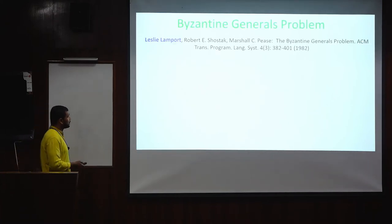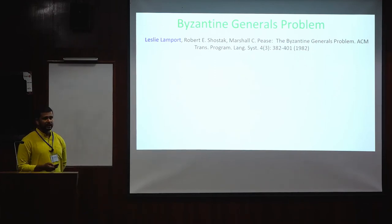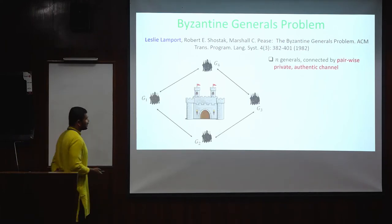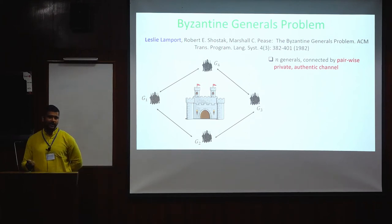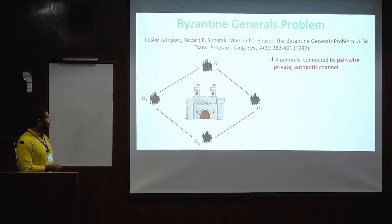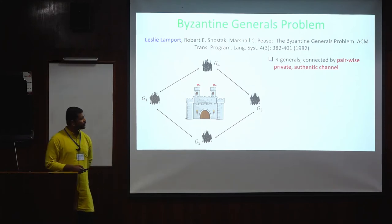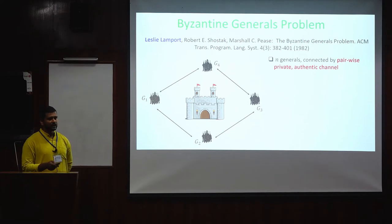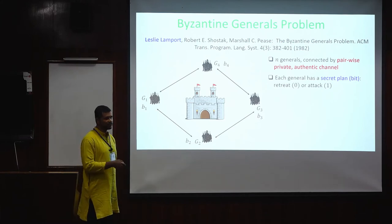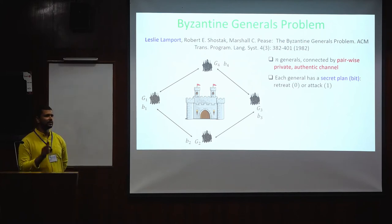Let's begin with the problem description. This is called the Byzantine Generals Problem, introduced by Lamport et al. in 1982. Lamport is a Turing Award winner. Consider the Byzantine Empire — the ancient name of the Roman Empire. Imagine the city is surrounded by enemy troops. There are N troops controlled by N generals who can exchange messages with each other. Each general has a private plan: either to attack the city or not. The private inputs of the generals are a bit — bit 0 means not to attack, bit 1 means to attack.